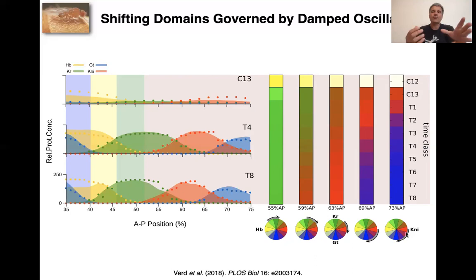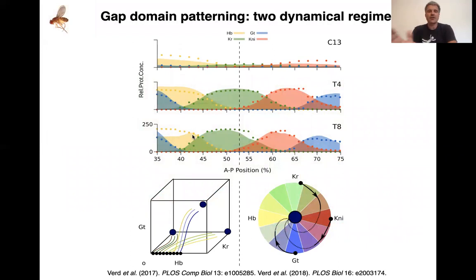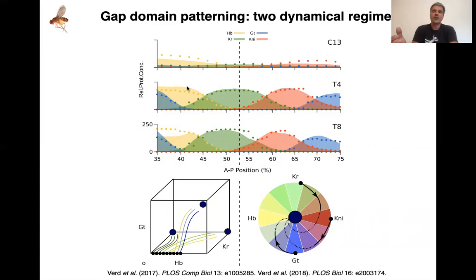So it's a really bad clock that only goes through about fifteen minutes of the hour before it breaks down. And it's not an oscillation, even though it is driven by an oscillator, because the expression patterns never repeat. Nonetheless, it's an oscillator that patterns the posterior of the embryo. To summarize: in the anterior, you have a completely different system where different nuclei fall into different basins of attraction and converge to different attractors — switch-like behavior. The nuclei switch between the expression of different gap genes depending on how much maternal gradient they experience. While in the posterior, you have this damped oscillator mechanism. Even though the patterns overall look very similar, the mechanism is very different.